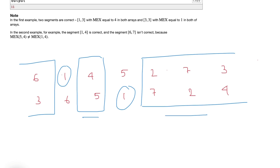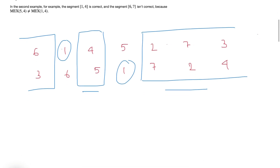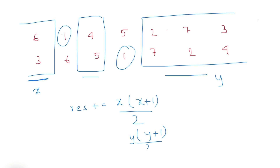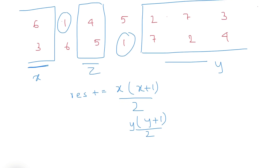All this gives the result for MEX equal to 1. Suppose there are x integers on the left, then result += x*(x+1)/2. Similarly if there are y integers on the right, add y*(y+1)/2, and z in the middle, add z*(z+1)/2. So for MEX equal to 1, we just find the positions of 1, count numbers to the left of the leftmost 1, to the right of the rightmost 1, and in between the two 1s, then apply this formula.